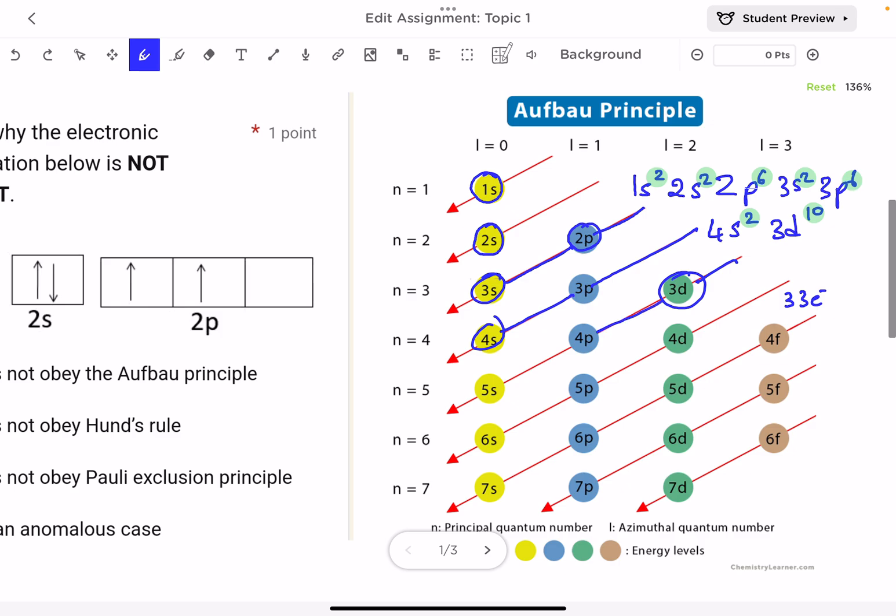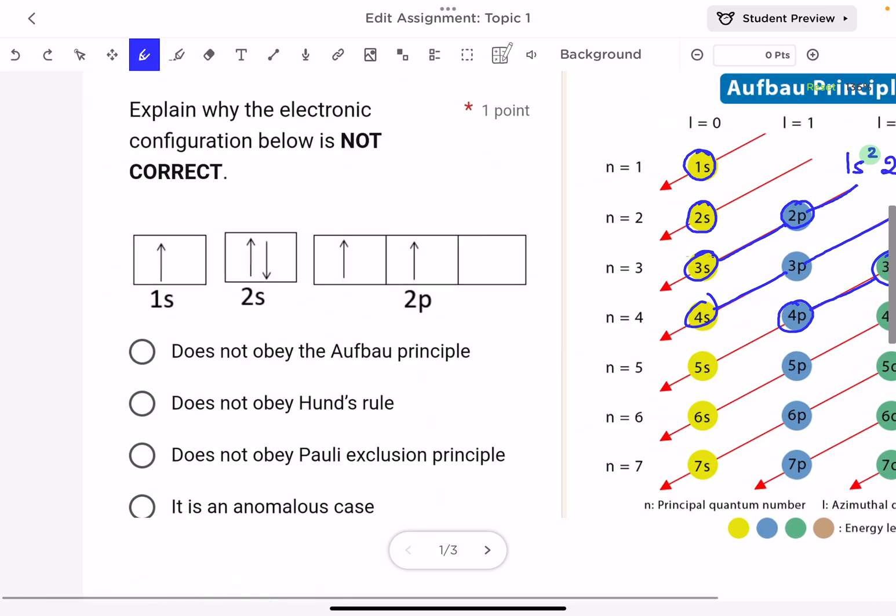So what comes after 3d is the 4p. Now we know that p takes six electrons, but we only need three, so we stop at 4p3. And like this, we are doing the electron configuration following the Aufbau principle.